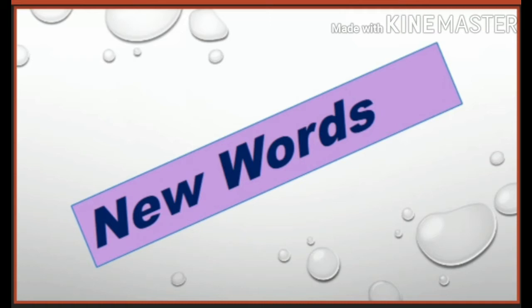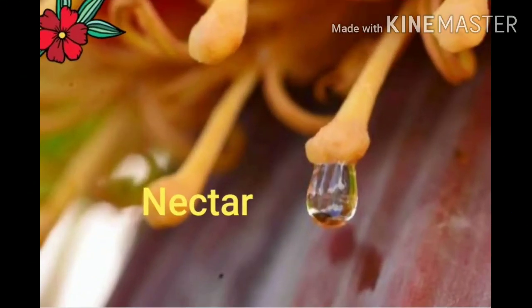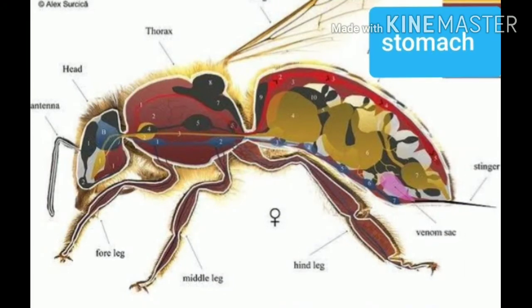Children, read the lesson again and again to become a good reader. Now I will introduce some new words given in your textbook. First: Nectar — a sweet fluid produced by flowers and made into honey by bees. Bloom means with the flowers fully open. Honey sack means honey stomach.